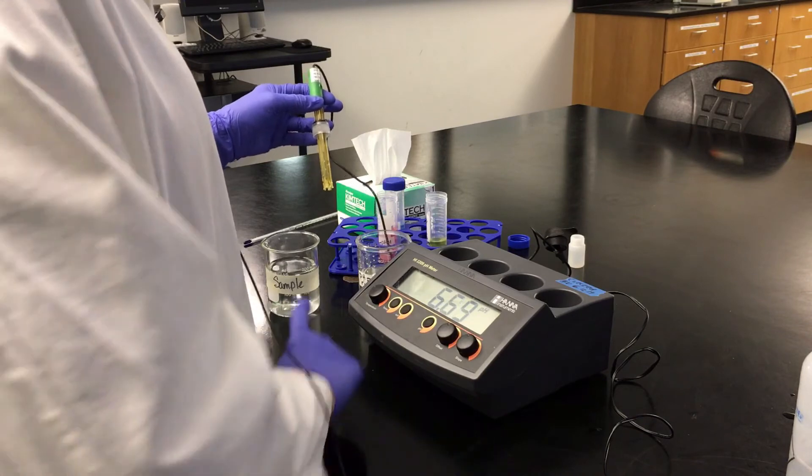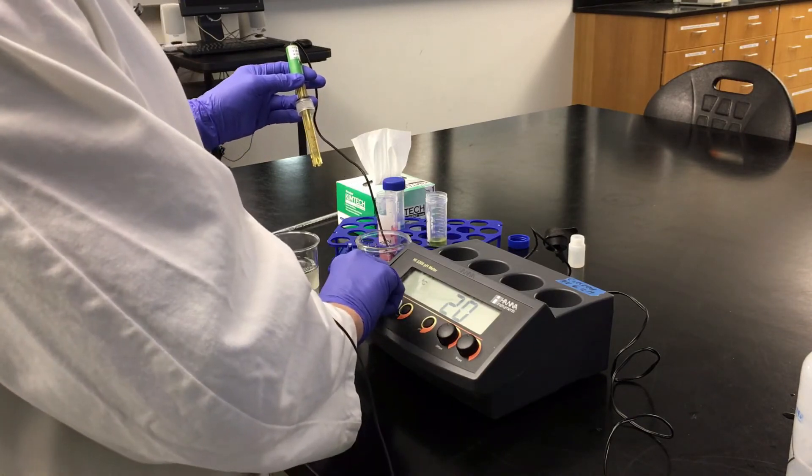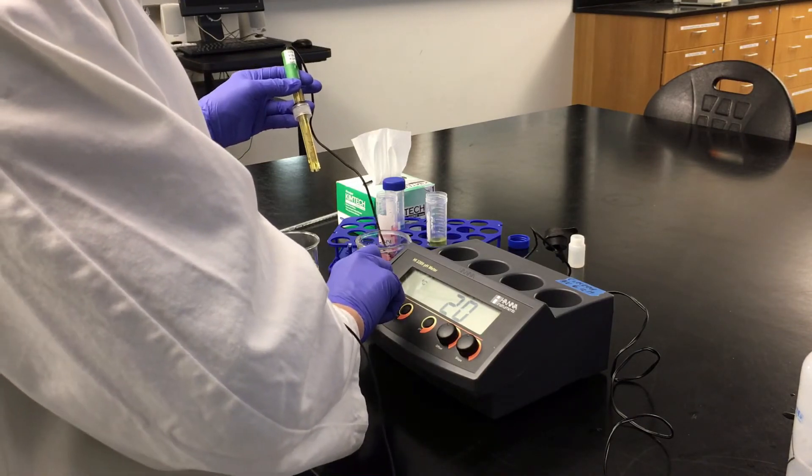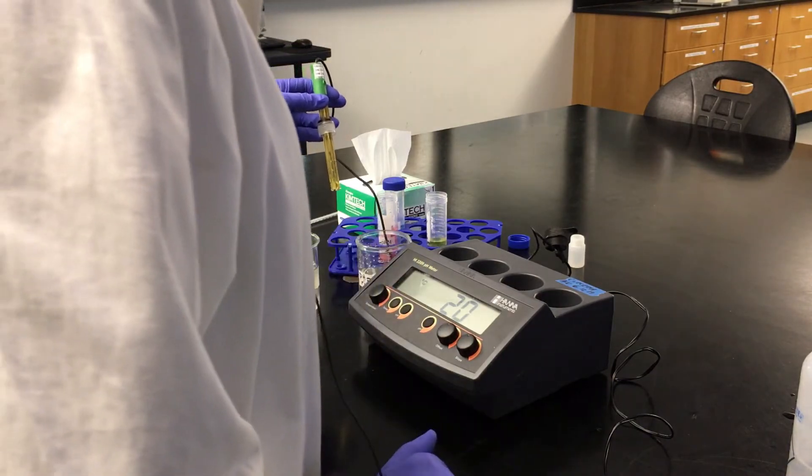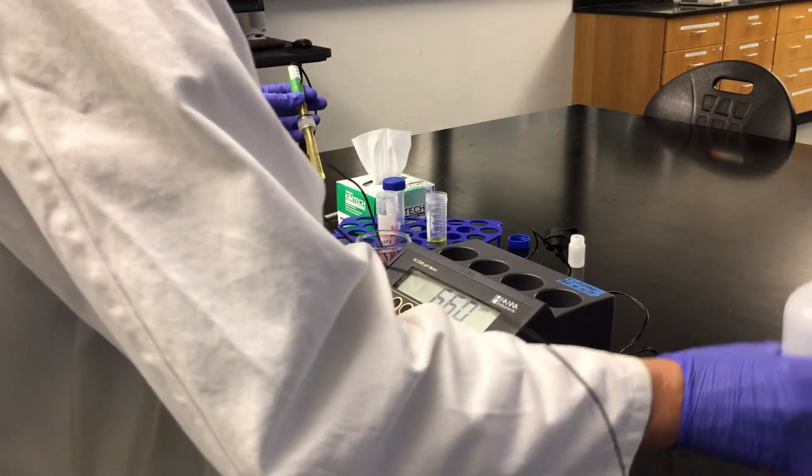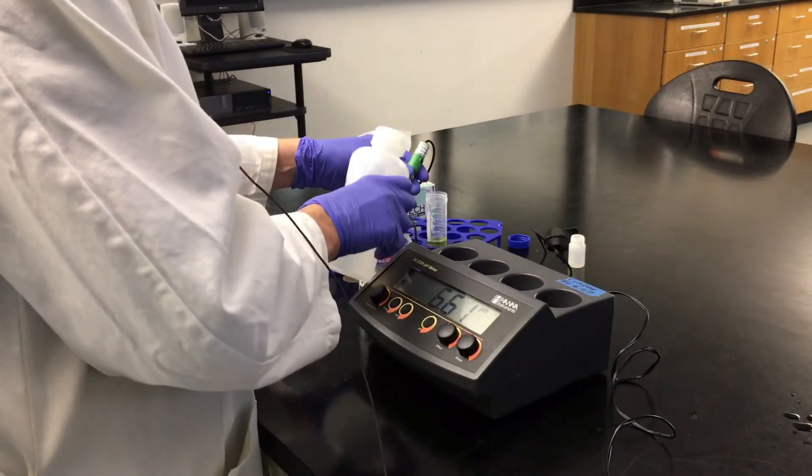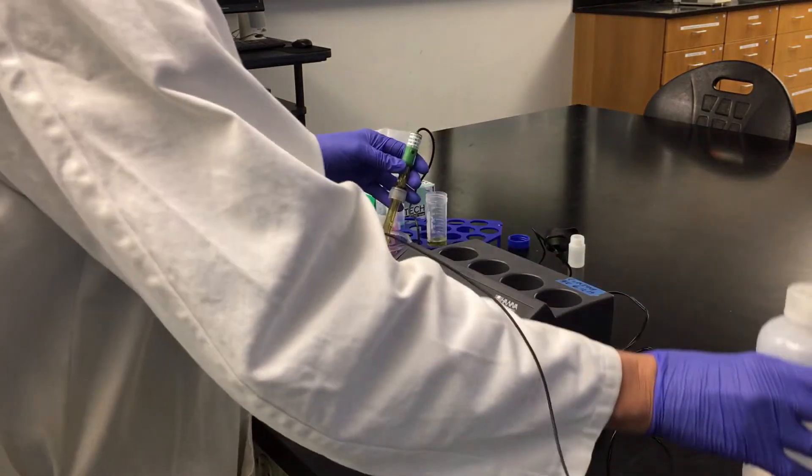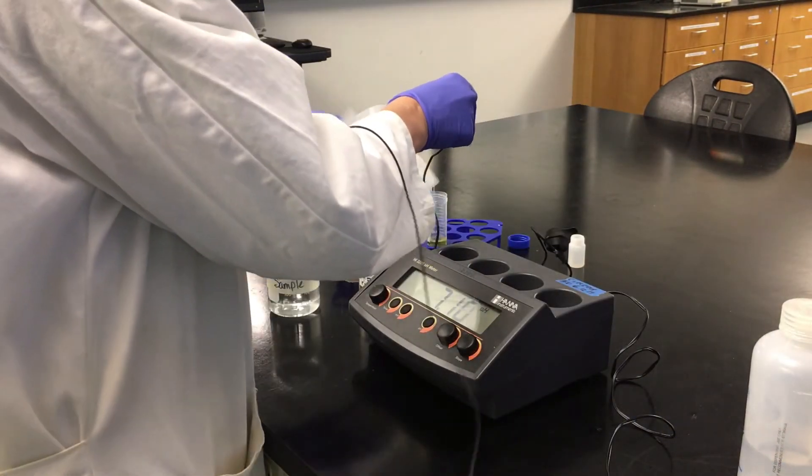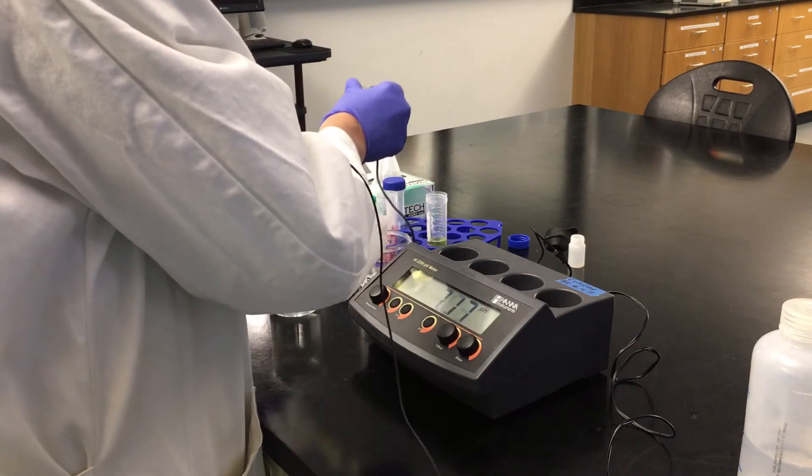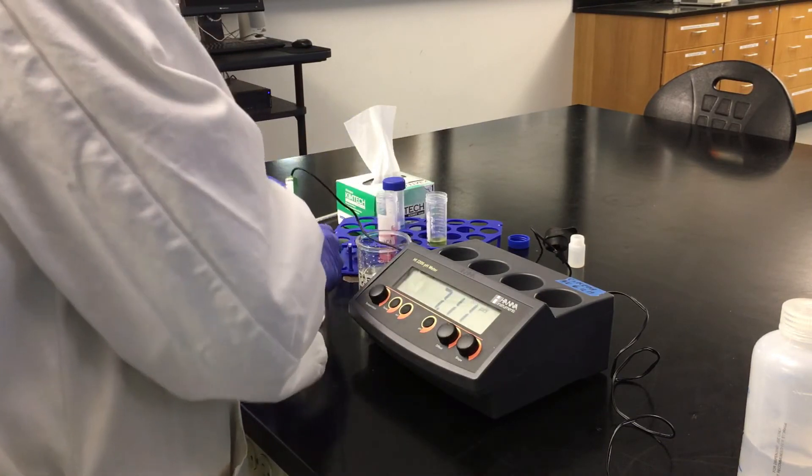If that was not the temperature, you would press and hold the temp button and adjust the temperature knob until you got to the right temperature, which it already reads 20 C. Then we are going to, again, place the probe into our sample and get a reading.